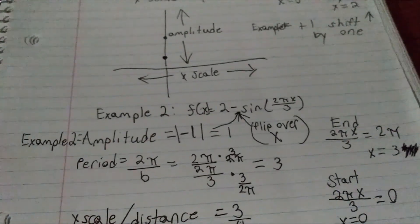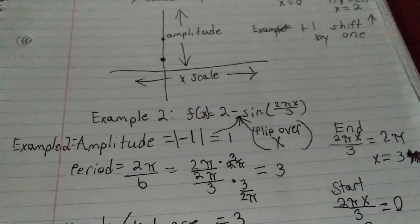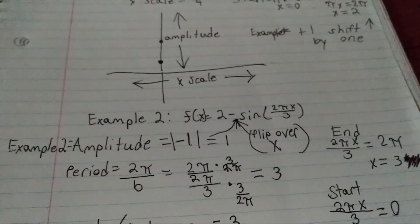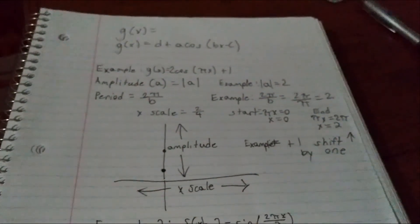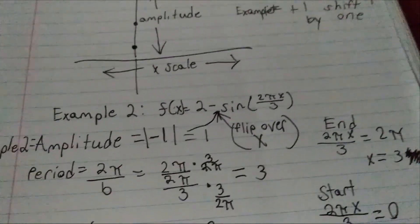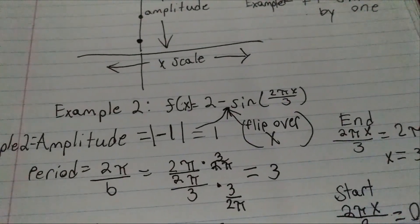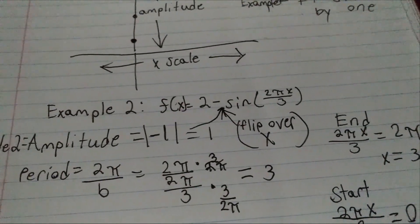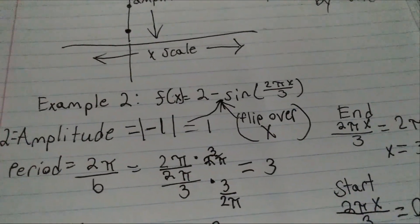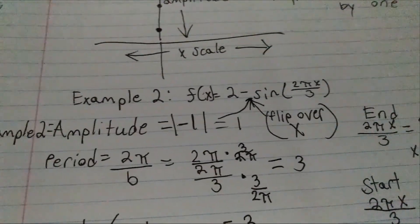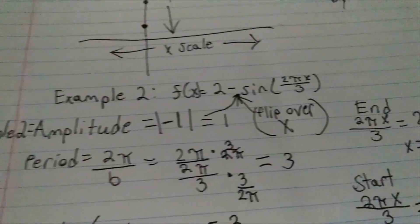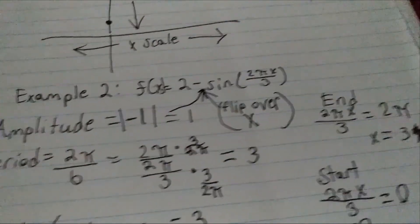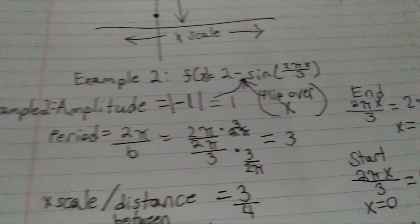As a second example, if we take f of x, which would be still the same, but we're using sine in this case. We have f(x) equals 2 minus sine of 2 pi x over 3. Amplitude is going to be 1, but because it's a negative 1, we're going to flip it, the starting point over x.